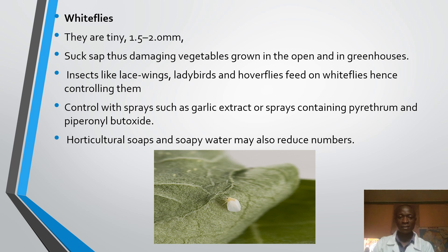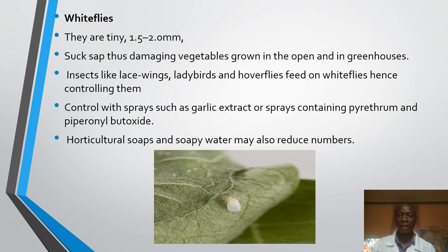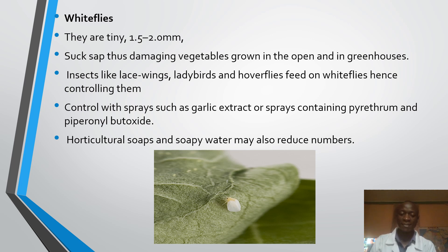Let's talk about whiteflies — most of you have seen these in our farms. They are usually tiny, about 1.5 to 2 millimeters in size. The adults resemble small moths and fly in large numbers. At times when you walk through your farm, you may see these small, tiny moth-like flies flying in large numbers, disturbed by your presence. During their young stages, they have wings and look more like scale insects.